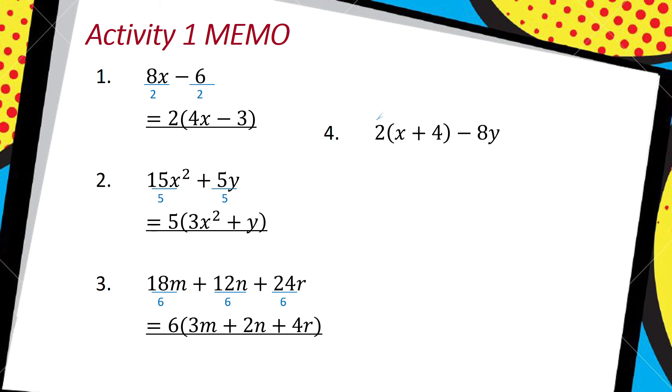I'm going to distribute that 2 into the brackets, which will give me 2x plus 8 minus my 8y. Now I'm going to try and find a highest common factor. A number that goes into 2, 8, and 8 would be 2, so I divide by 2. I'm going to say equals 2, open bracket, x plus 4 minus 4y.